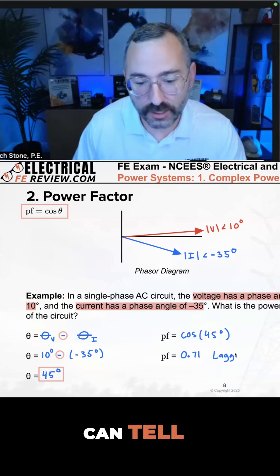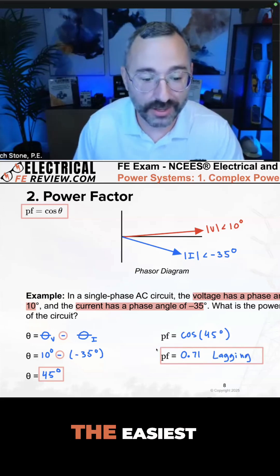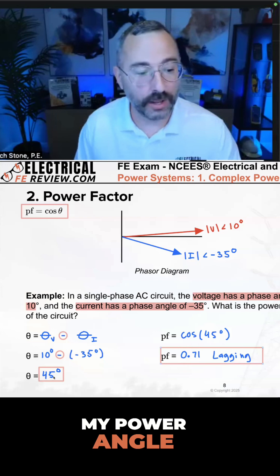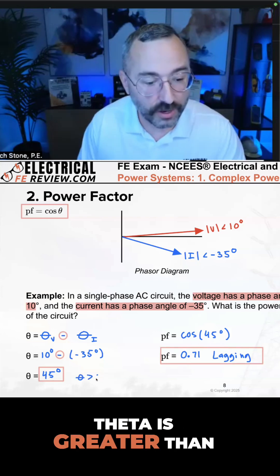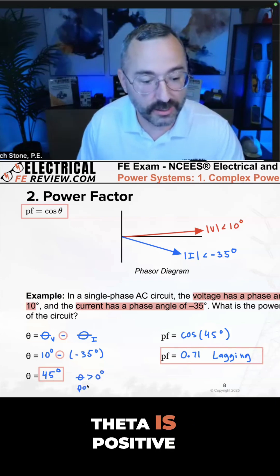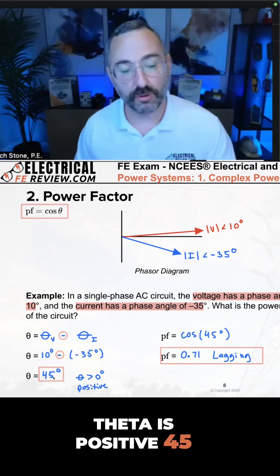How do we know? Two different ways we can tell in this example. Number one, the easiest: my power angle theta is greater than zero degrees. Theta is positive, right? Theta is positive 45.